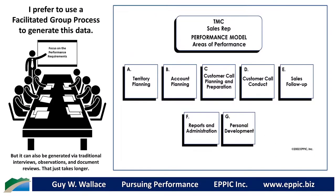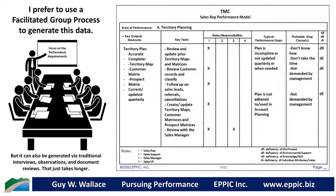We start with generating what I call the areas of performance before we dive in deep and gather specific details. By specific details I mean the key outputs that are produced, the measures that reflect the stakeholder requirements, the key tasks that are performed to produce that output, and then the various roles and responsibilities.